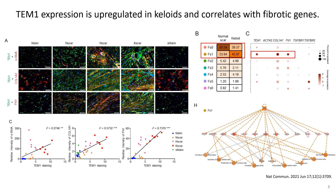So first, immunofluorescence study shows that Thiamin expression is upregulated in keloid. And Thiamin is localized and correlated with fibroblast activation markers, including alpha-SMA, Caldesmon-1A1, and also fibronectin.